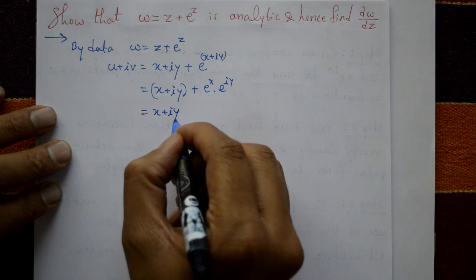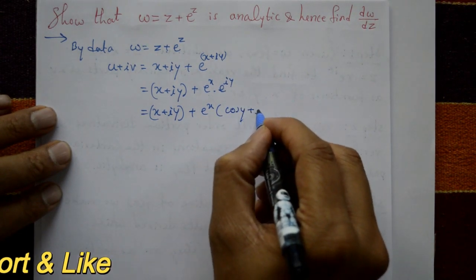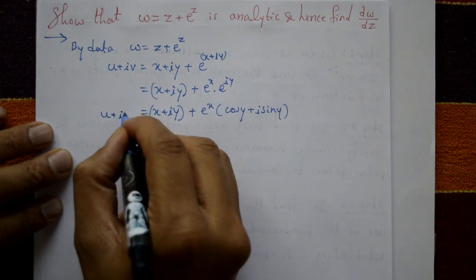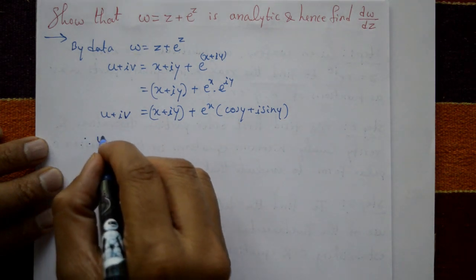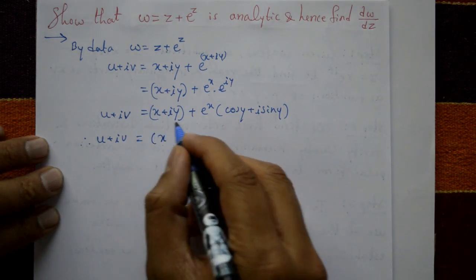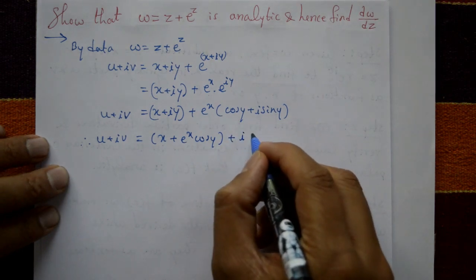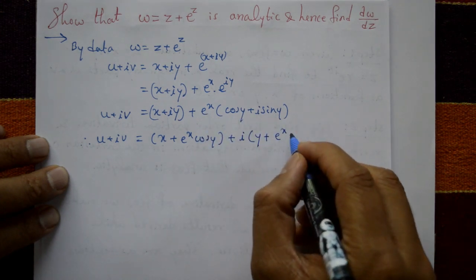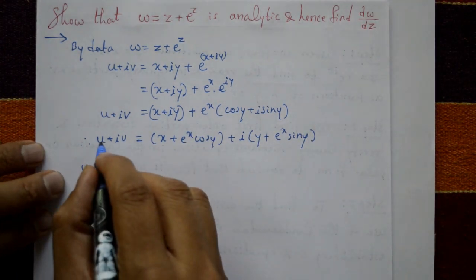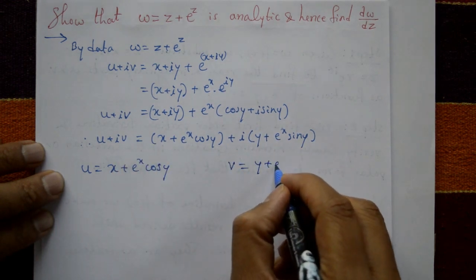Now x + iy + e^x · e^(iy), and e^(iy) = cos y + i sin y. So u + iv = x + iy + e^x(cos y + i sin y). Taking real and imaginary parts: u = x + e^x cos y, and v = y + e^x sin y.